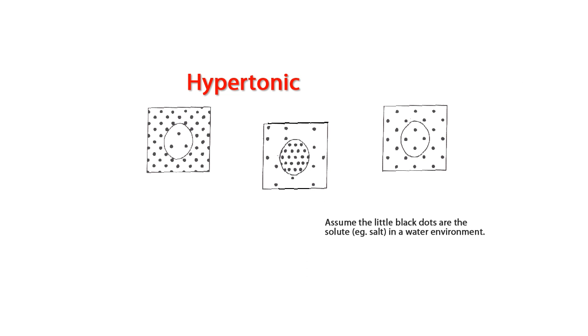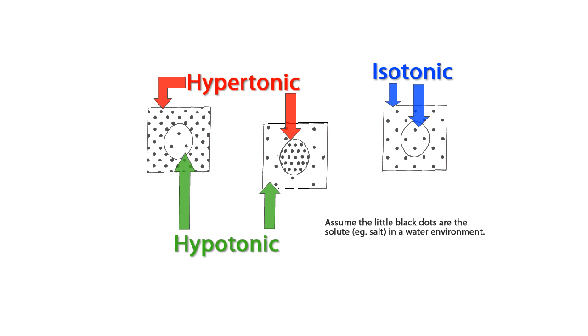Hypertonic refers to the solution with the greatest concentration of solute compared to another. Hypotonic refers to the solution with the least amount of solute compared to another. And isotonic refers to solutions with the same amount of solute.